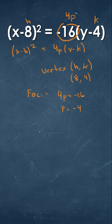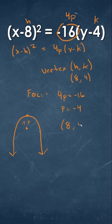To figure out where the focus is, we have to think about what this graph looks like. Since we have a negative p value, it's going to be downward facing. Our vertex would be right here, and then our focus would be here. That value is going to be equal to p, which we got as negative 4, because it would be going downward. So from our vertex at (8, 4), we're going to be going down on the y-axis, subtracting 4 from our y value — so we'll have 8, 4 minus 4, which gives us a value of (8, 0).